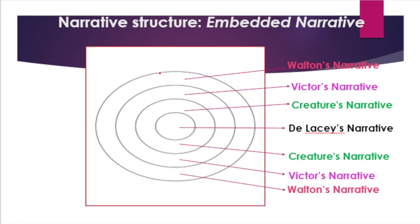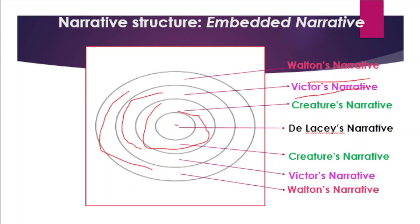To summarize our discussion, we can say that at the core of the novel, the creature's story is presented to us framed by Victor's narration, which itself is framed by Robert Walton's epistolary narrative. The overall structure of the novel is symmetrical. It begins with the letters of Walton, shifts to Victor's tale, then to the creature's narration, so as to switch to Victor's narrative again and end with the records of Walton. In this manner, the reader gets a different version of the same story from different perspectives and points of view.